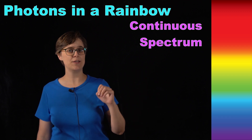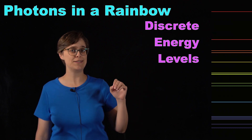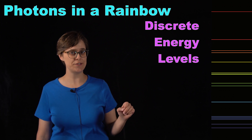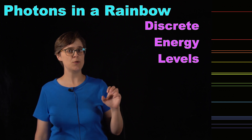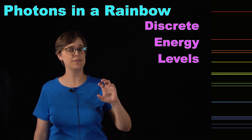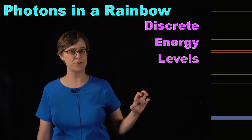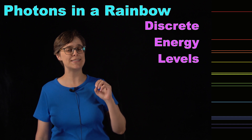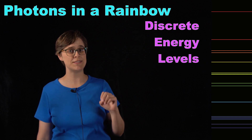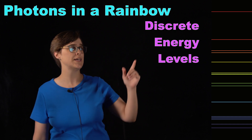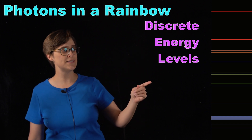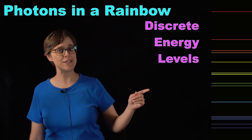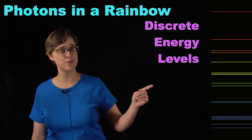If instead your photons had discrete energy levels, you would not be seeing the full spectrum of colors — you would be seeing a set of specific colors. This is what discrete energy levels look like.